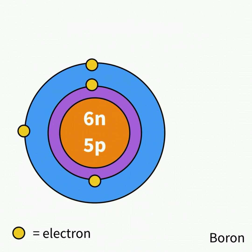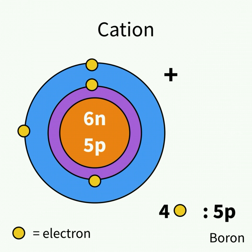An ion can be positively charged if there are fewer electrons than protons. These are called cations.